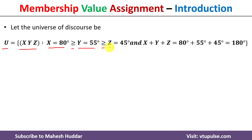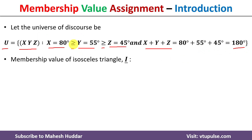Z is equivalent to 45 degrees, and the sum of all three — x plus y plus z — is equivalent to 180 degrees. This is our universe of discourse.